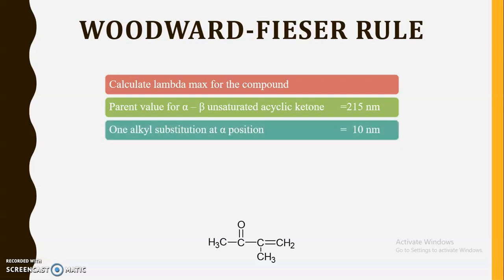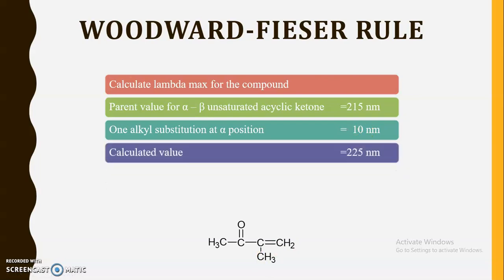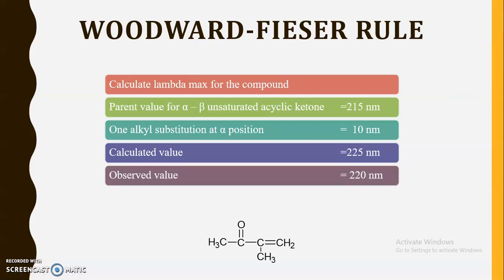Further, there is one alkyl substitution at the alpha position. This alpha carbon atom is having this alkyl substitution, so we add an increment of 10 nanometers. The calculated value is therefore 215 + 10 = 225 nanometers. The observed value is 220 nanometers, meaning there is no large difference between the calculated value and the observed value. This is about the first example.